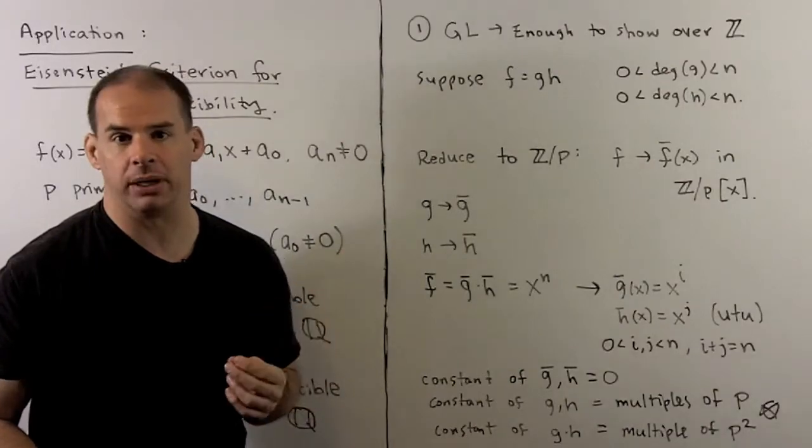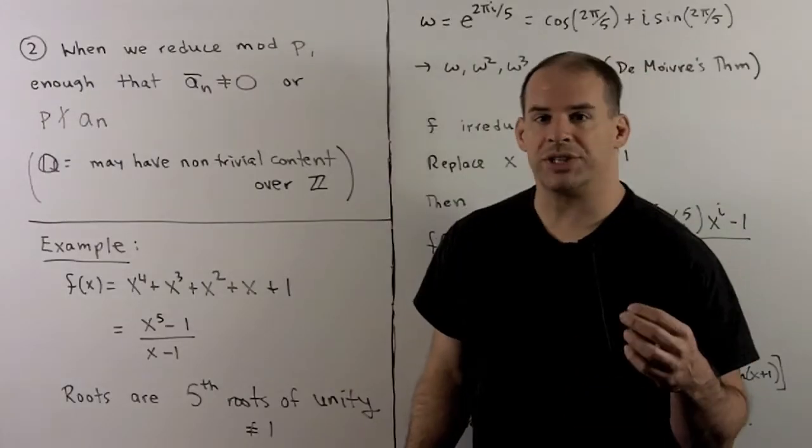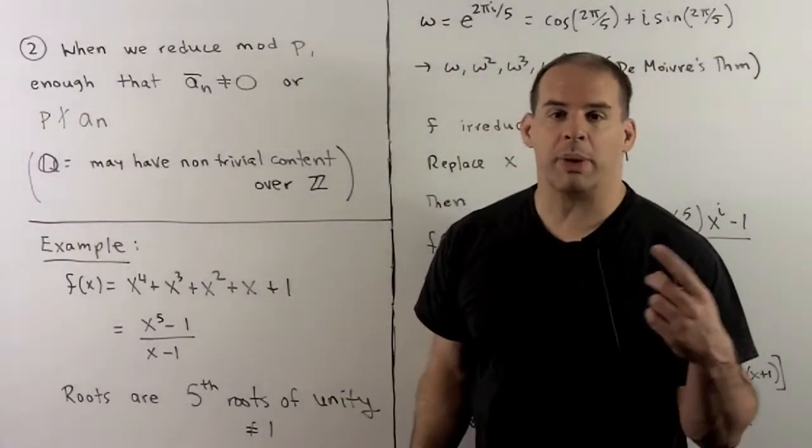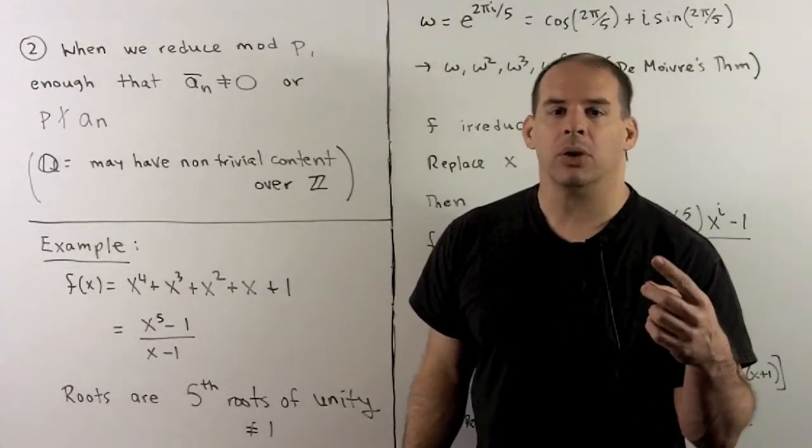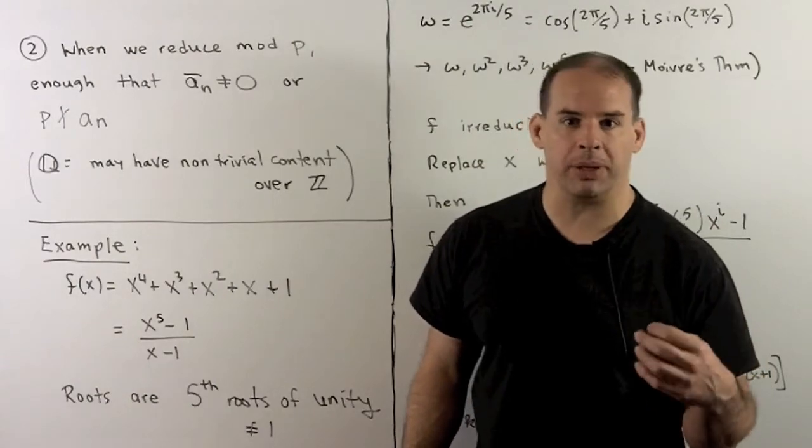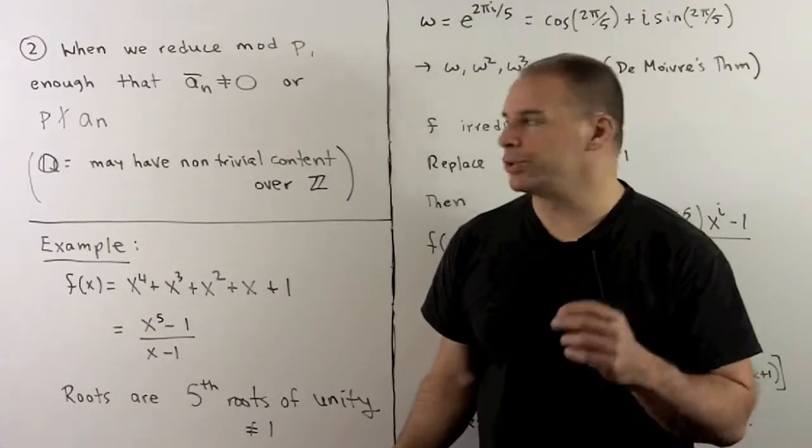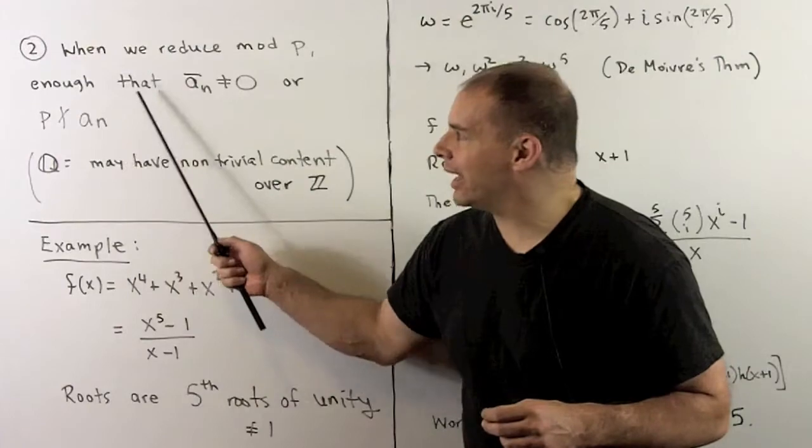So that's our first statement. For statement two, when we reduce mod p in our argument, we don't need to guarantee that the coefficient of x to the n be equal to 1. We just need that it be a unit in Z mod p. So all we need to assume is that p not divide a_n.